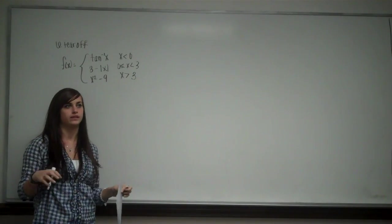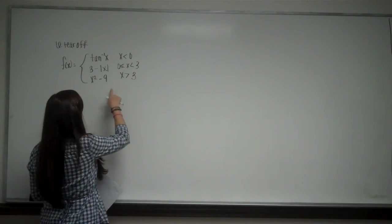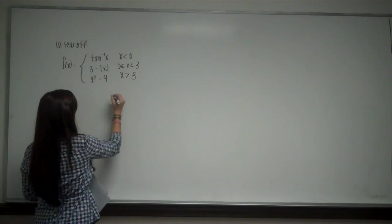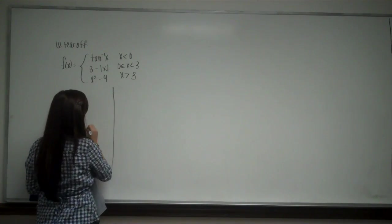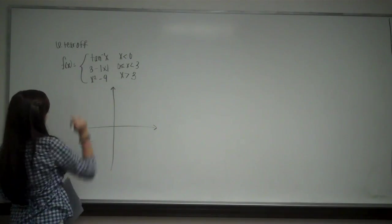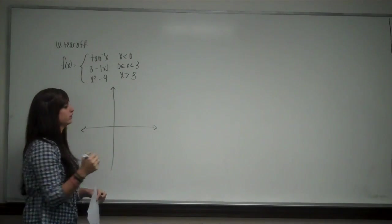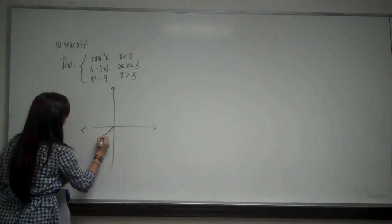So it's important to know what our basic graphs are so we can graph these equations. So I'm going to take one step at a time. I draw my coordinate axis. First tangent inverse x is going to look like tangent x but flipped around. So it's going to come from here and out.